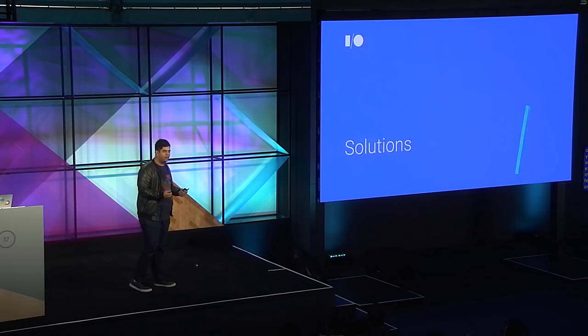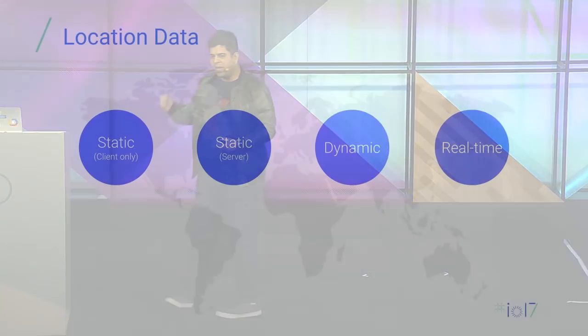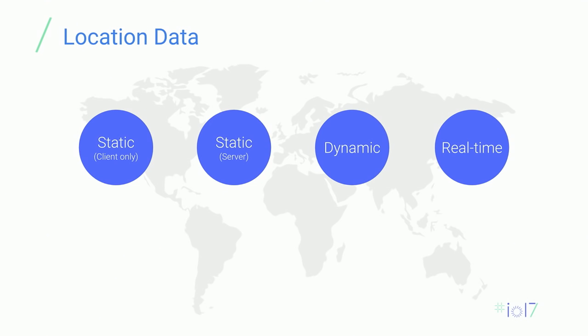As my team started building these out, we came up with different architectures for different Maps API uses. The one thing that kept defining our architecture was location data. Depending on the type of data you have dictates what kind of architecture you use. Broadly speaking, we had three types: static data that doesn't change very often; dynamic data, like user-generated content or real estate listings that change frequently; and real-time data for things like tracking vehicles.